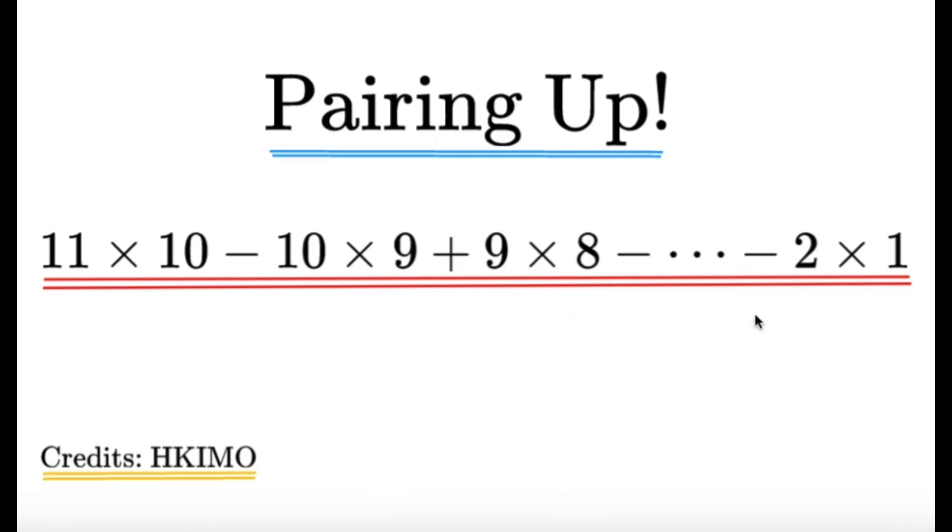Alright, so we have a pattern here. It's 11 and 10, 10 and 9, 9 and 8, and then we have some alternating signs here. A little bit sad that we cannot really see all the terms. So let's try to write down everything from 11 until 2, until the 1 here, so we can see what we can do here. Because it will be obvious what to pair up after we see the entire summation.